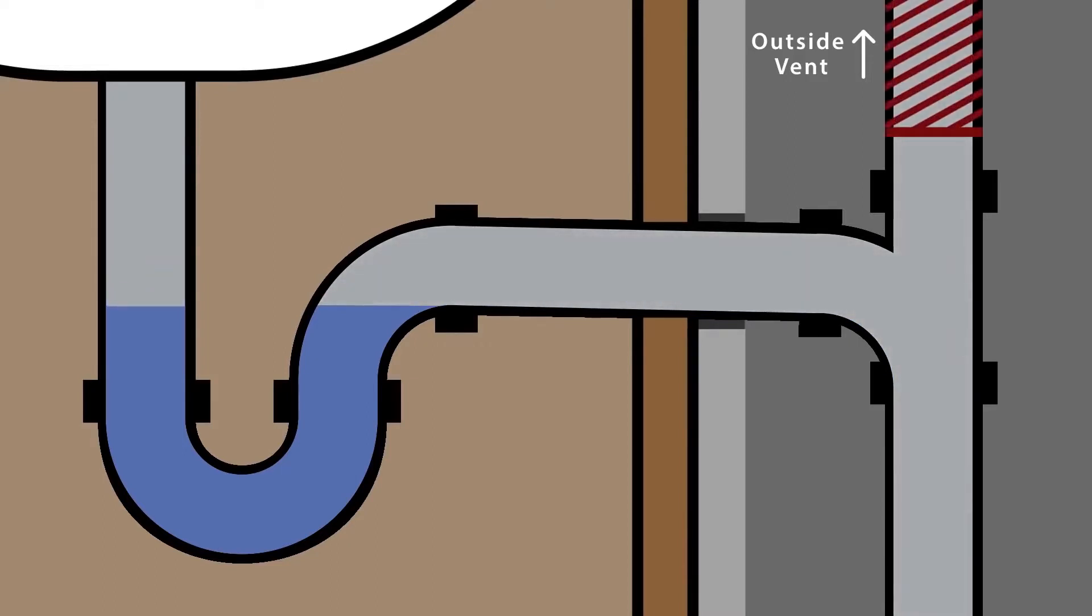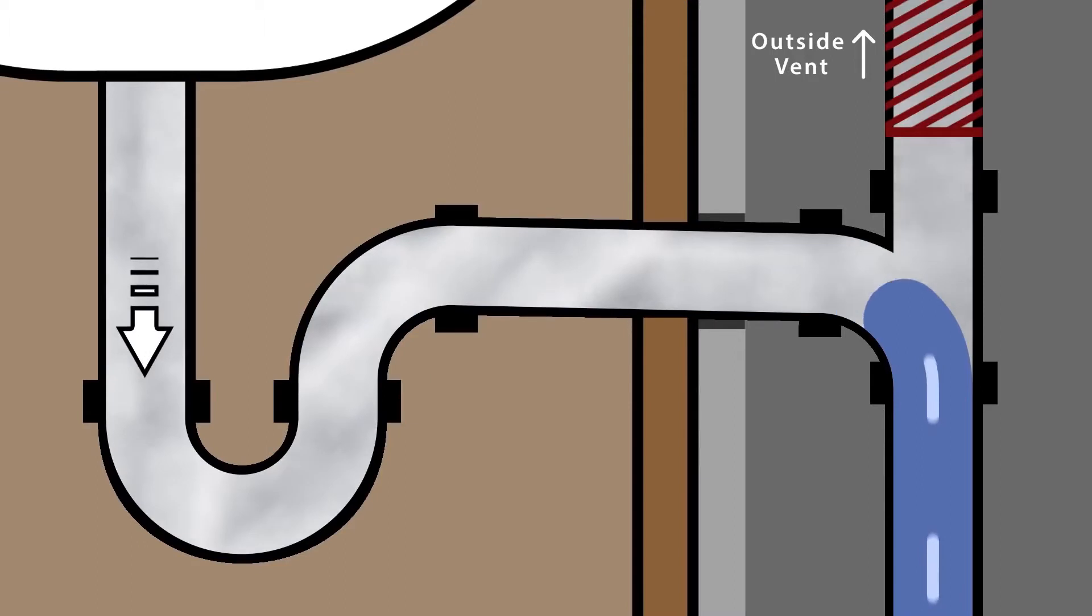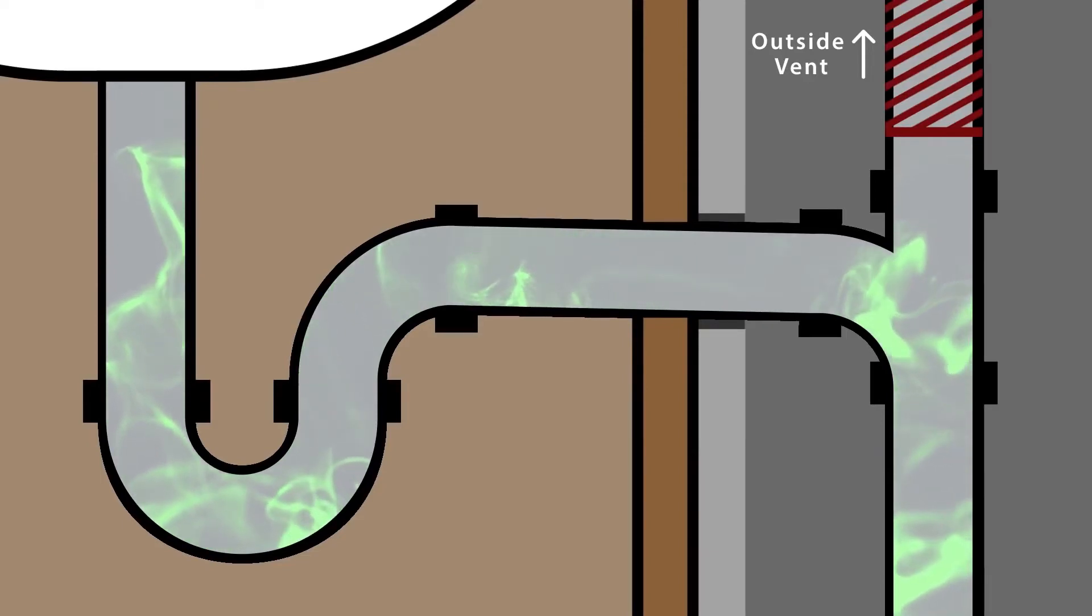Now if the vent is blocked by snow, ice or debris, then the trap seal could be sucked out with the draining water. When this happens you might hear a gurgling sound as air is pulled through the sink drain. And you might start to smell sewage coming out of that sink.